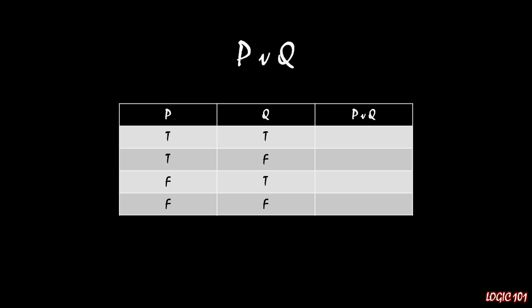When P is true and Q is false — the second row — at least one is true, so P or Q is true. In the third row, P is false and Q is true, so the third column is true because Q is true. It's only in the fourth row, when both are false, that P or Q is false. So we finish this truth table: true, true, true, followed by false. In the first three rows at least one of the two simple sentences is true; it's only in that last row where both are false that P or Q is false.